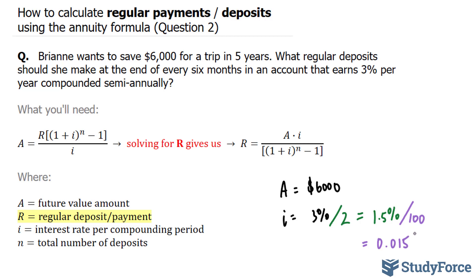Now, we're also told that her trip will be within 5 years. So she's going to be saving for 5 years. To find your n value, what we will do is take 5 years and multiply it by 2, which represents the total number of deposits that she'll make. And that is equal to 10. So now that we have all the information that we need,